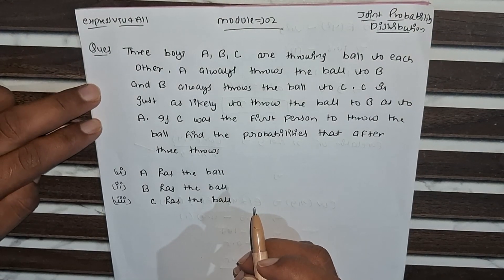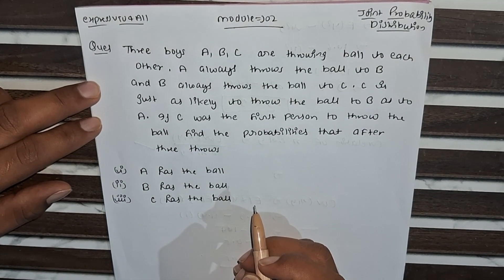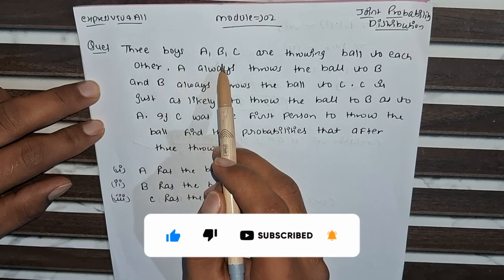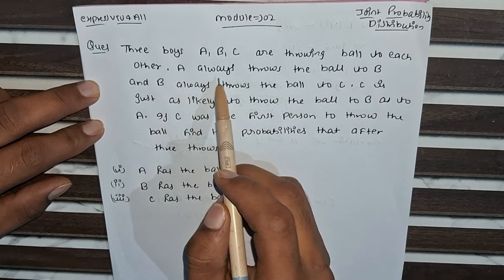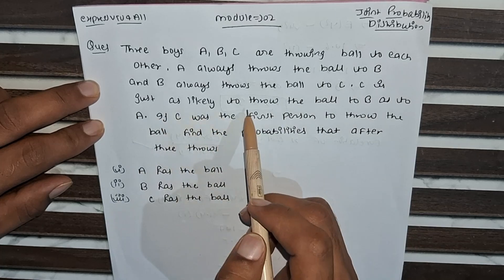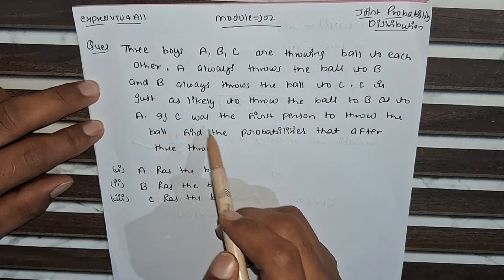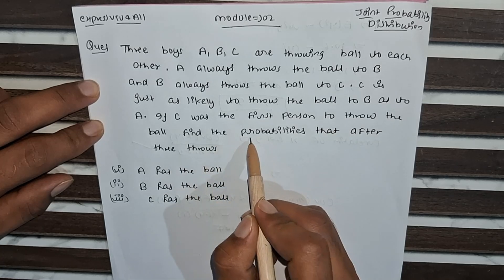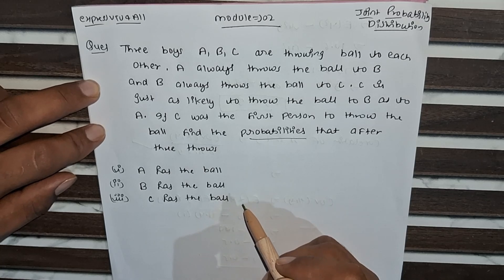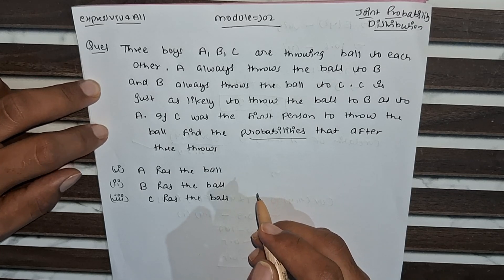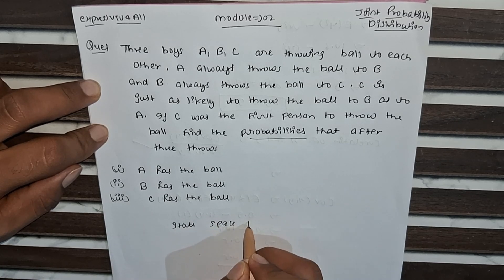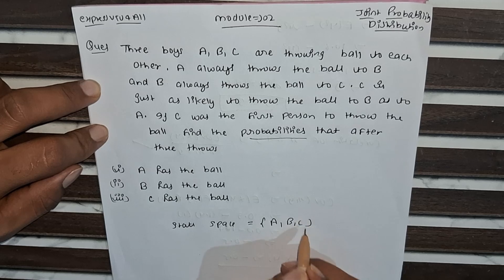Hello everyone, welcome back to Extra YouTube for All. Today we are going to solve a very important problem from Module 2: Joint Probability Distribution. The question is: three boys A, B, C are throwing a ball to each other. A always throws the ball to B, and B always throws the ball to C. C is just as likely to throw the ball to B as to A. If C was the first person to throw the ball, find the probabilities that after three throws, A throws the ball, B throws the ball, and C throws the ball.